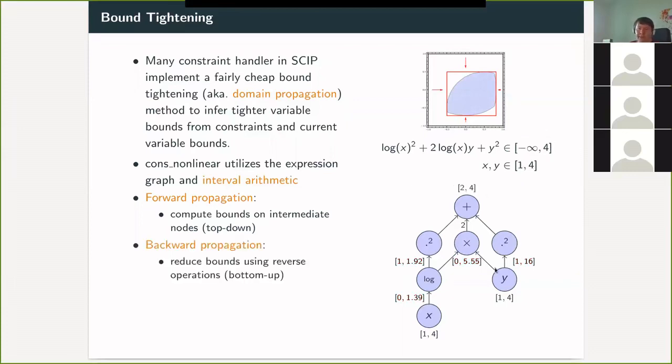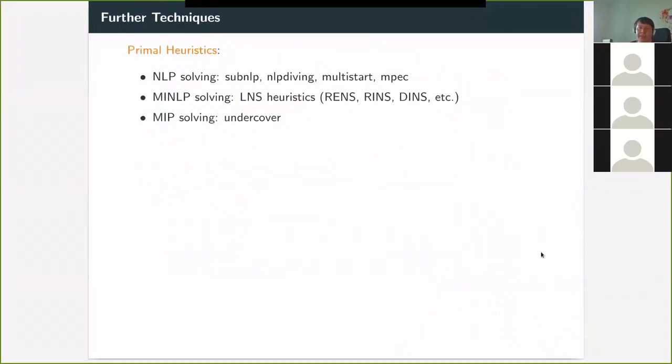And then we basically do the interval arithmetic backwards. So we can compute now new bounds for the operators given the parent operator and the other operators here. So I think for an easy one, it's like something like we have here in Y square, and we somehow got from the constraint that Y square to be between one and three. So Y has to be between one and square root of three. And so we have found a tighter bound for Y than one, four, it's now one and square root of three.